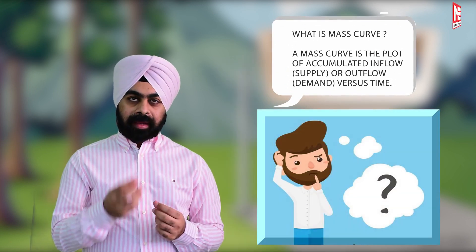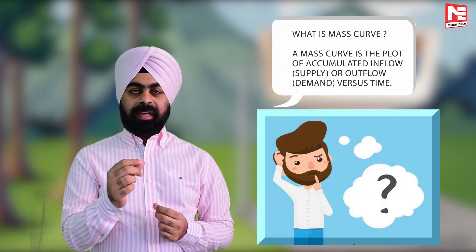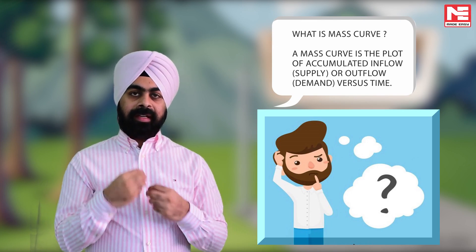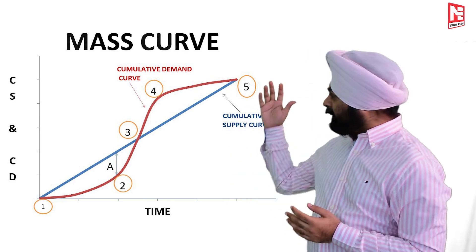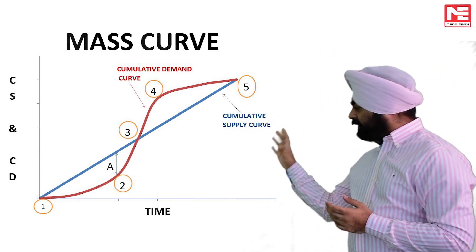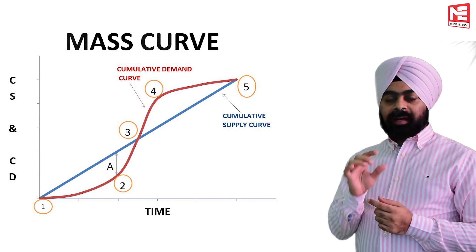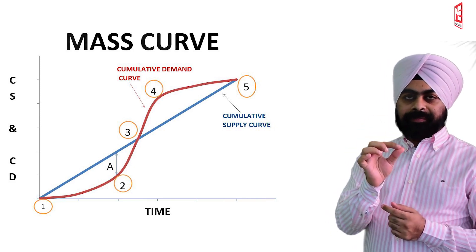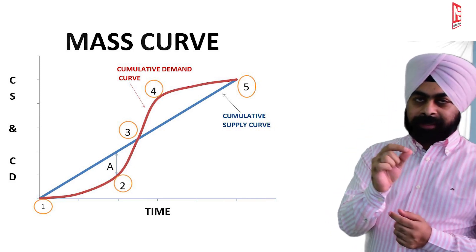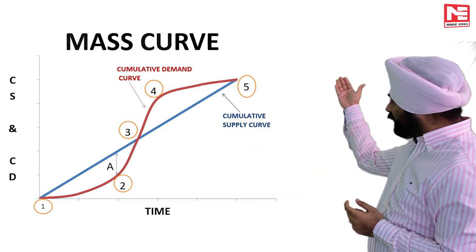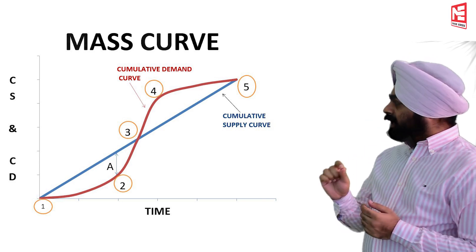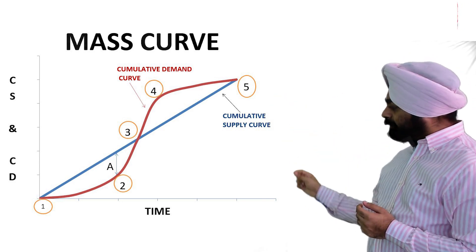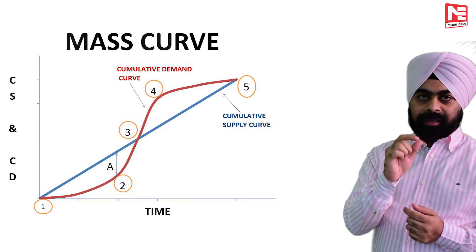So what is a mass curve? A mass curve is a plot between accumulated inflow — in our case it is supply — or outflow — in our case it is demand — versus time. Since the rate of supply was constant, cumulative supply will increase linearly with time. Since demand was variable, cumulative demand with respect to time is increasing but non-linearly.